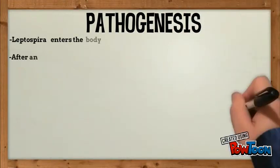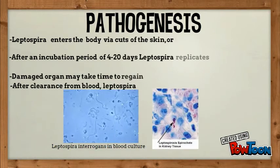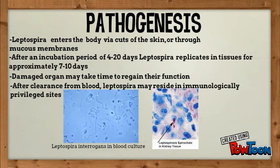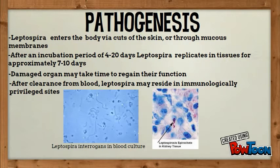Moving on to pathogenesis: Leptospira invades the body after penetrating exposed mucous membranes or damaged skin. After an incubation period of 4 to 20 days, Leptospira circulates in the blood and replicates in many tissues including the liver, lungs, and central nervous system for 7 to 10 days. Damaged organs may take some time to return to normal function after treatment.